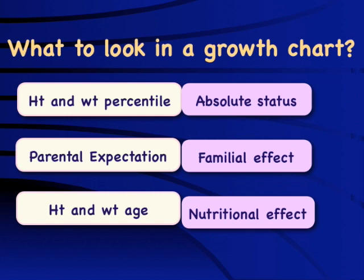When we talk about growth failure in terms of evaluation perspective, typically we talk about growth failure being either nutritional — in which there is an issue about less nutrition, infection, absorption issues like celiac disease, renal tubular acidosis — or endocrine causes in which nutrition is enough but the hormones are not there to really cause growth, like growth hormone deficiency, hypothyroidism, Turner's syndrome, pseudo-hypoparathyroidism.